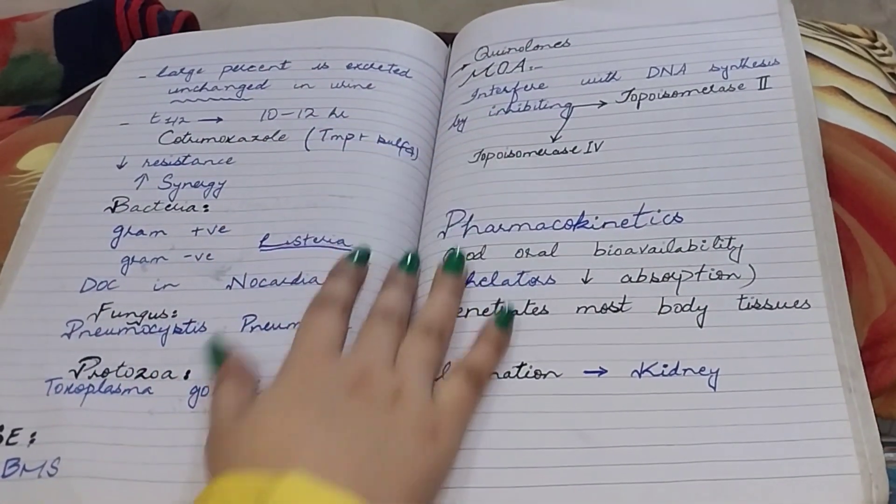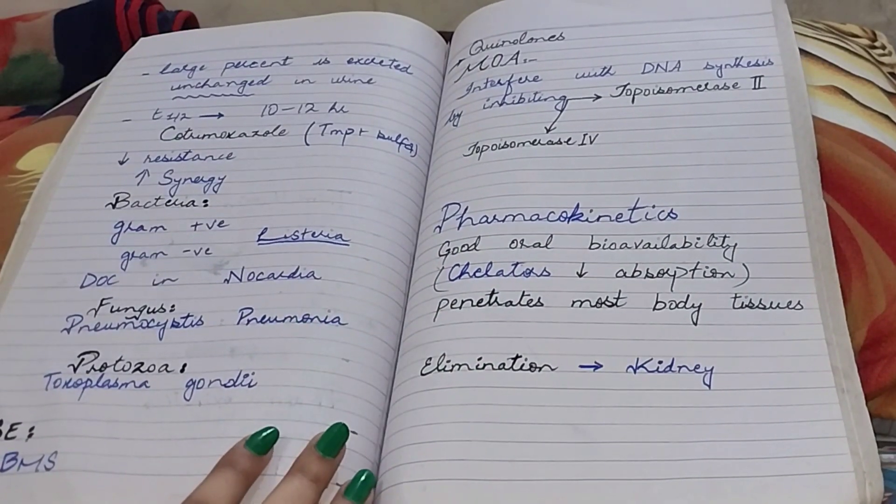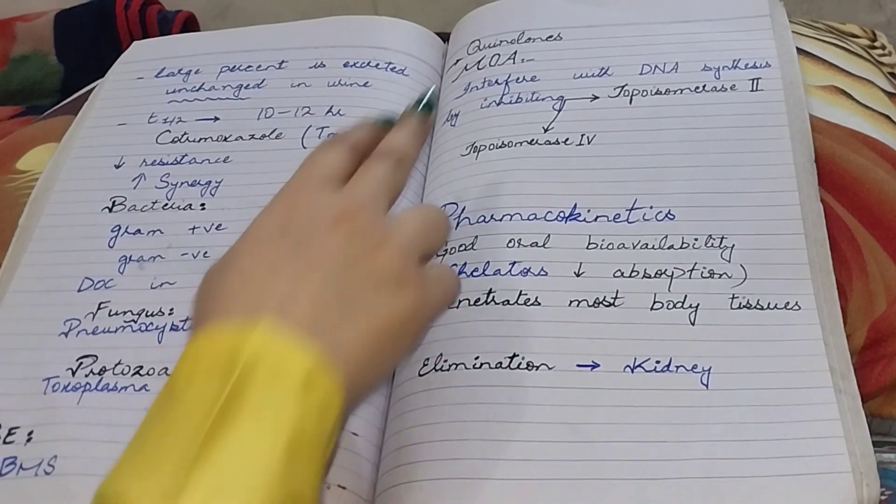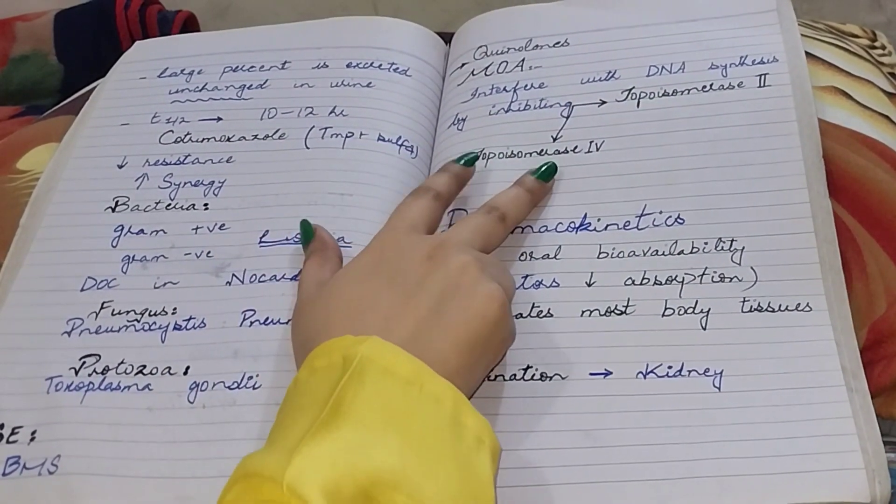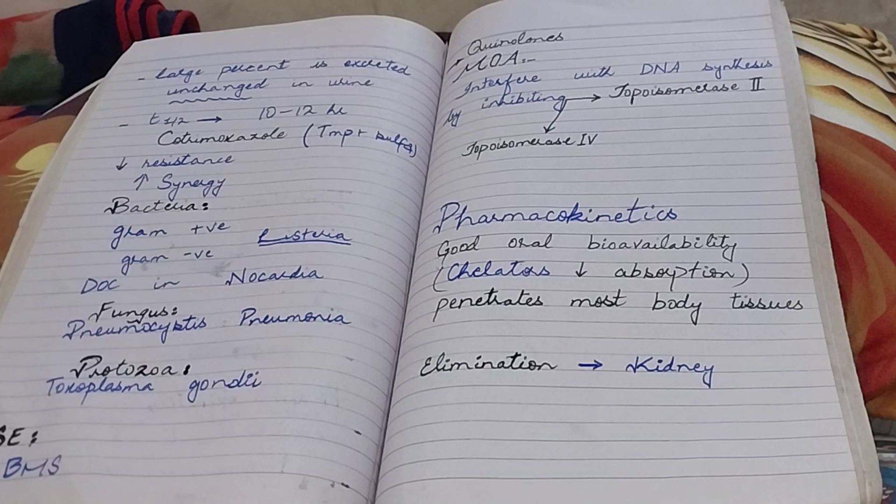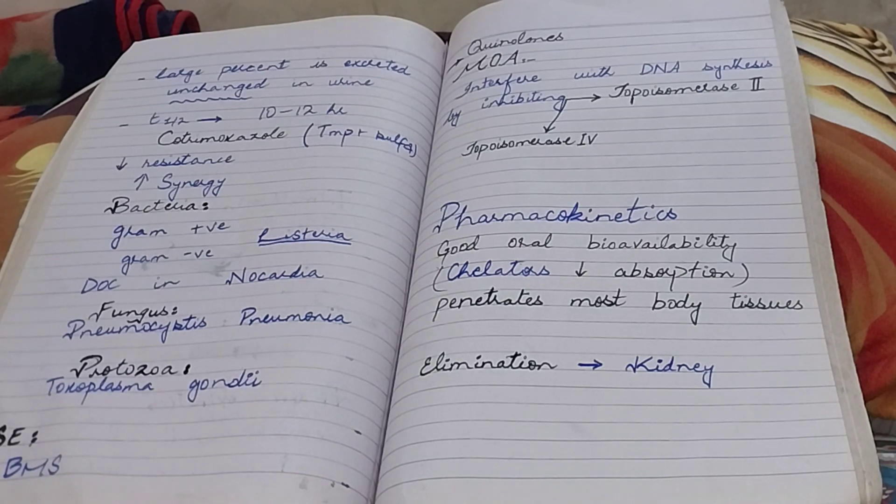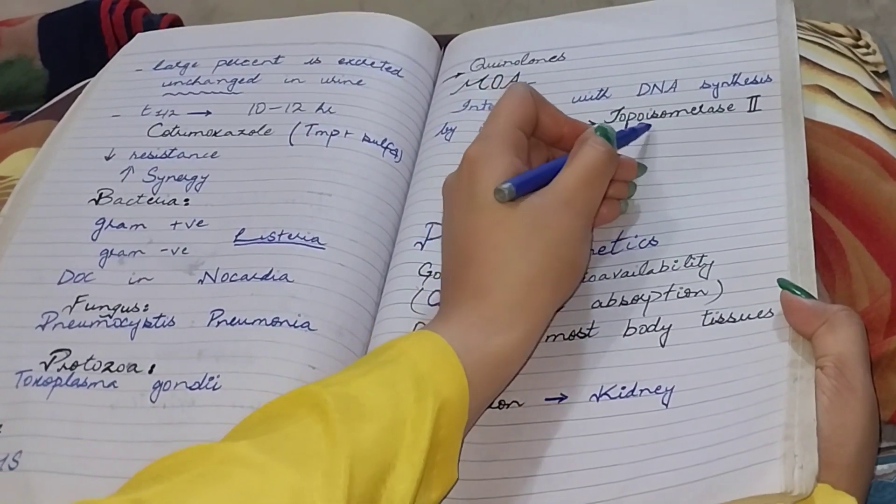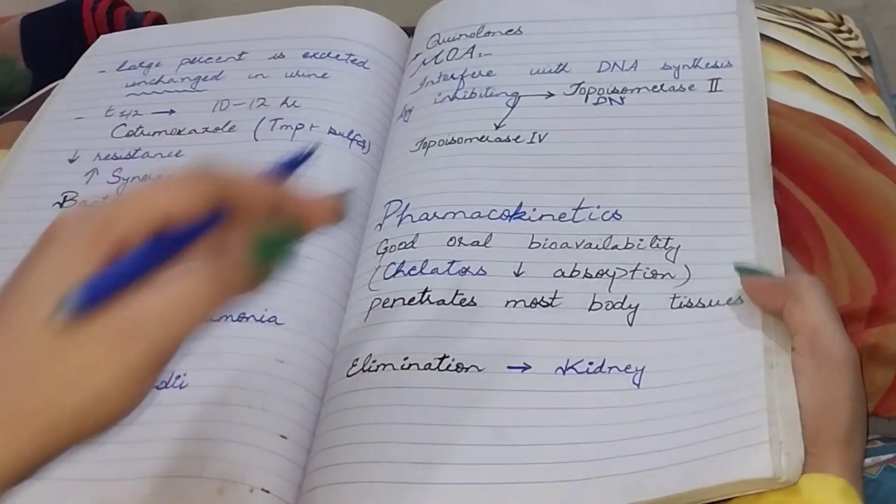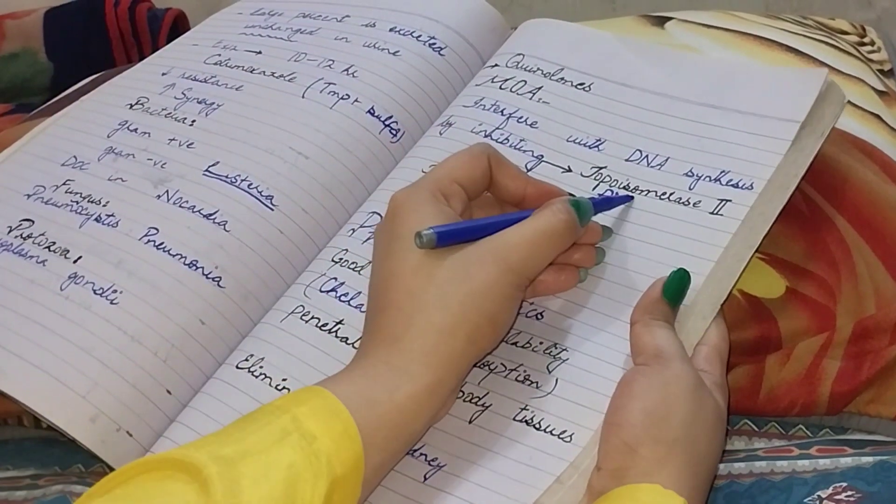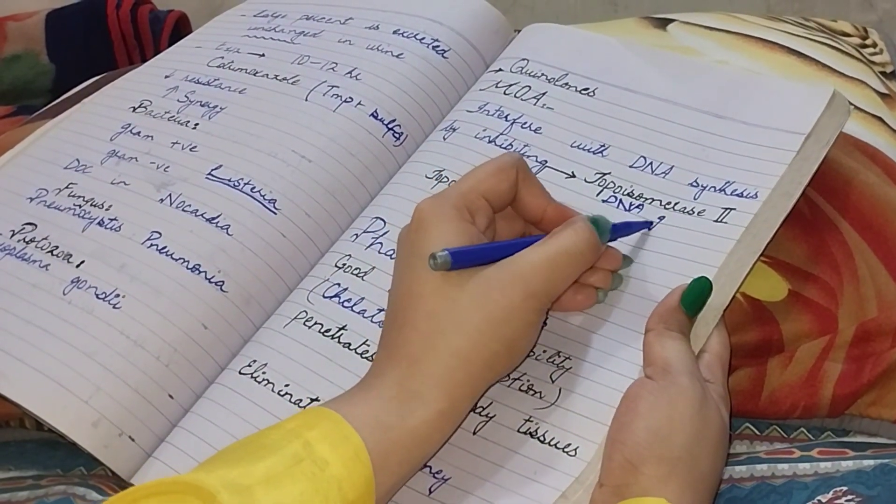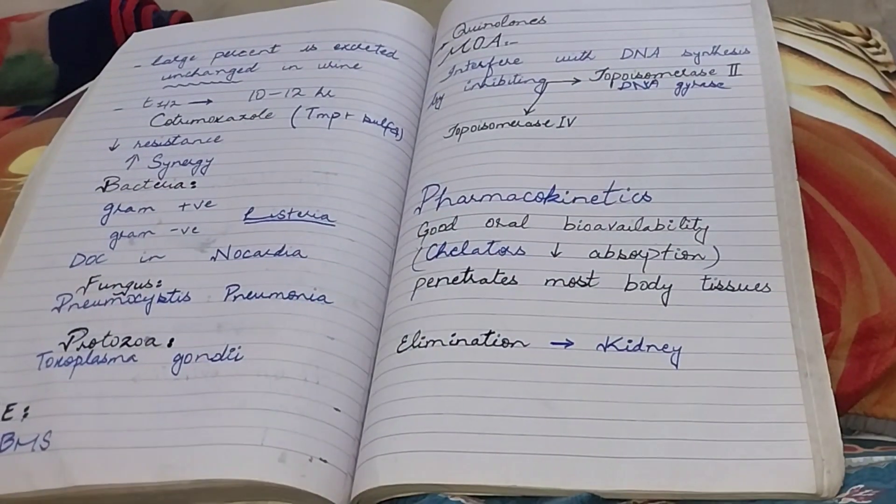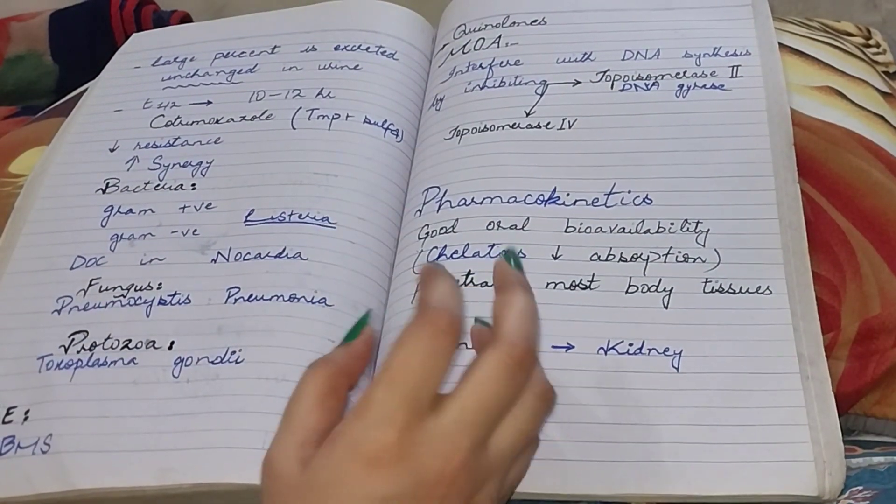Let's see the mechanism of action. Quinolones interfere with DNA synthesis by inhibiting two enzymes: topoisomerase 2 and topoisomerase 4. The topoisomerase 2 is also known as DNA gyrase.